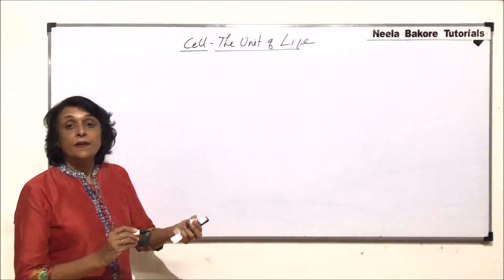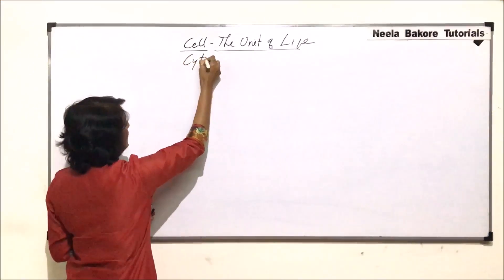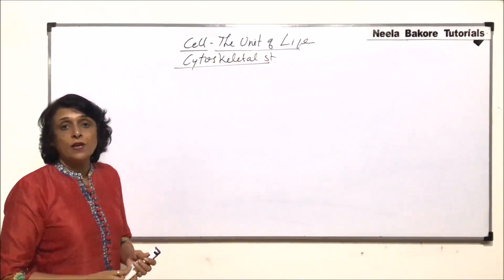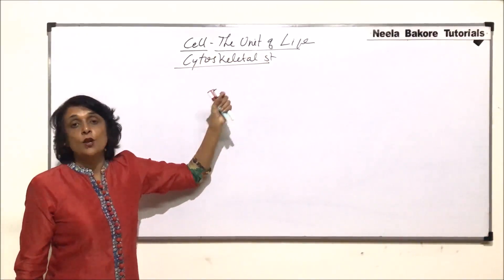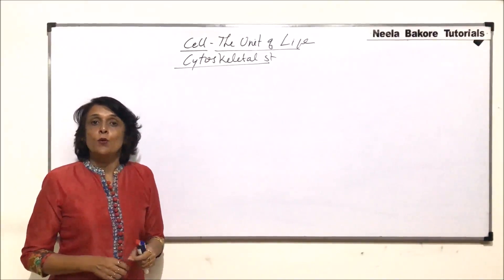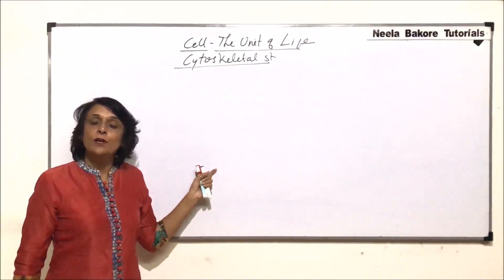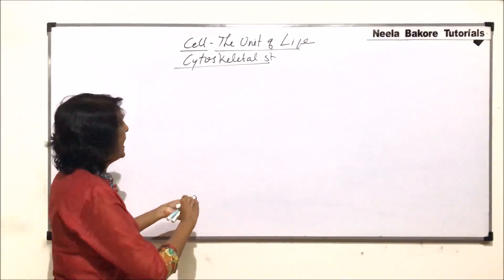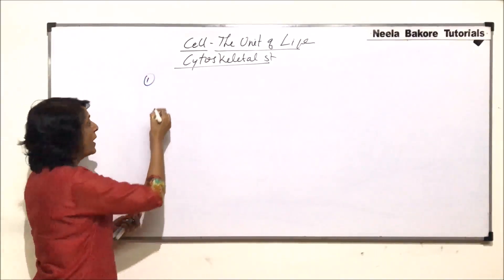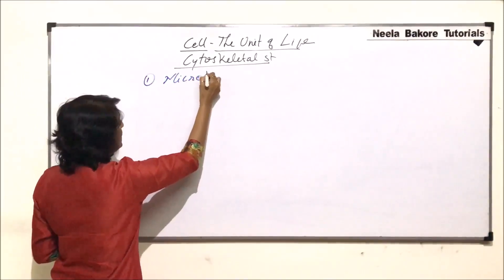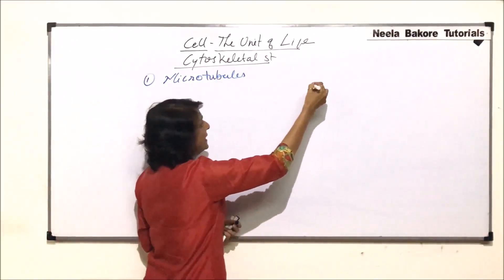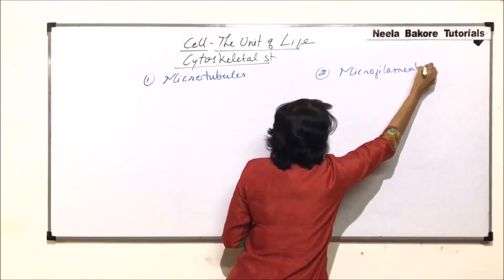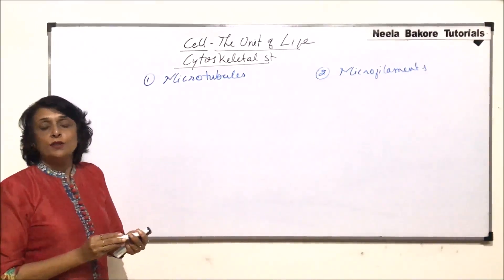In this video we will take up the cytoskeletal structures. When we use the word cytoskeleton, we are talking about cytoplasmic structures which are performing the skeletal job — that means providing shape and strength to the particular cell. Because they are present inside the cell, we are calling them cytoskeletal structures. Under cytoskeletal structures we will take up two: microtubules and microfilaments.